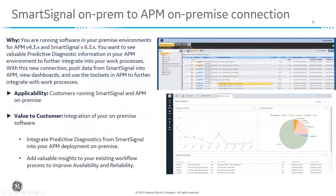When you're running software in your on-premise environments for APM version 4.3 and SmartSignal 6.3.4 or newer, you want to be able to see valuable predictive diagnostic information in your APM environment to further integrate them into your work processes.